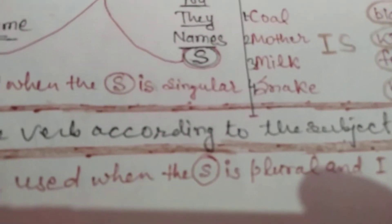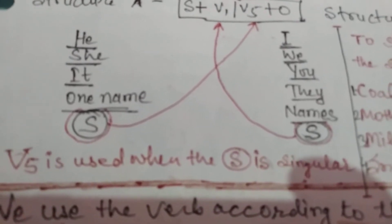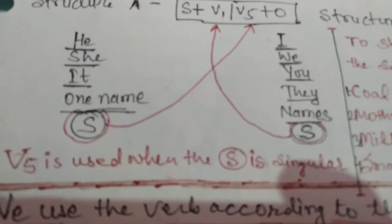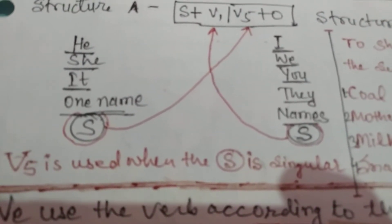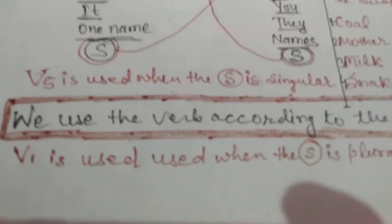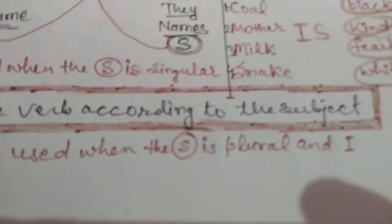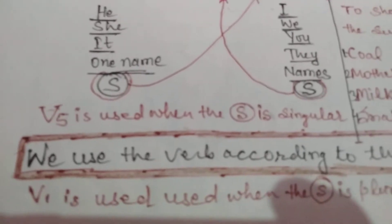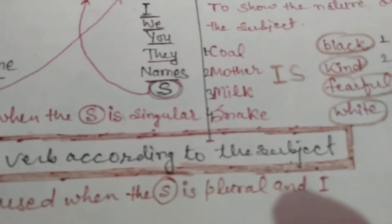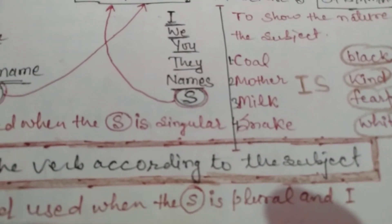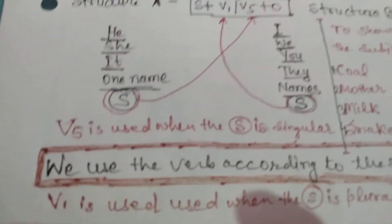V5 is used when the subject is singular, and V1 is used when the subject is plural or with 'I'. We use the verb according to the subject — we have to use V1 or V5 according to the subject.